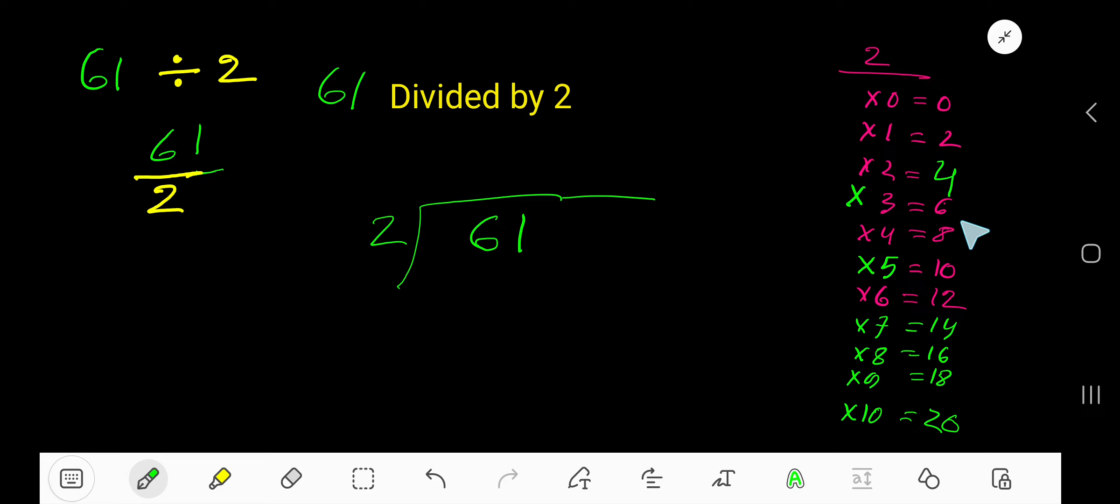2 goes into 6, how many times? Here, 6. 2 goes into 6, 3 times. Write 3 and now multiply 3 times 2, that is 3 times 2, which is 6.